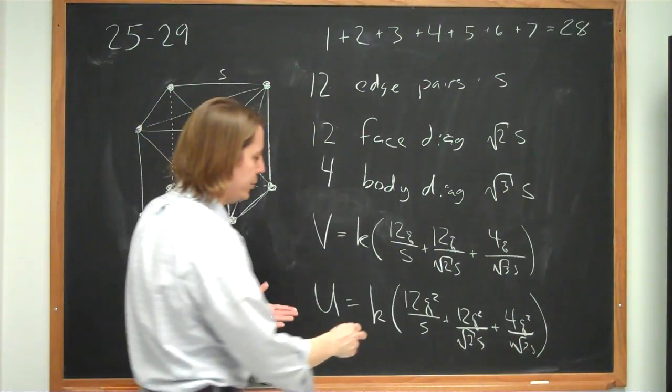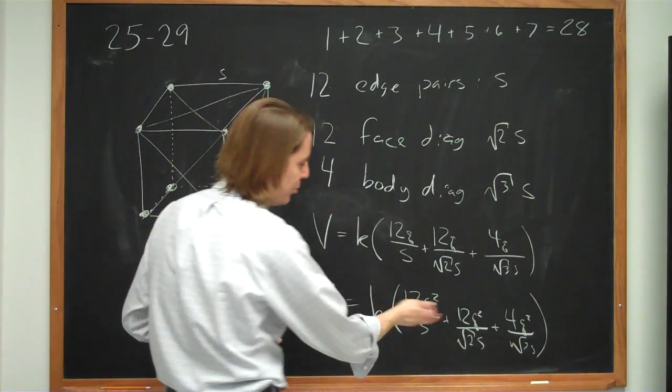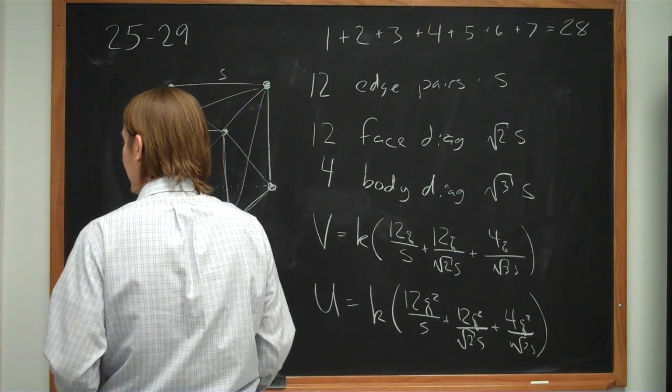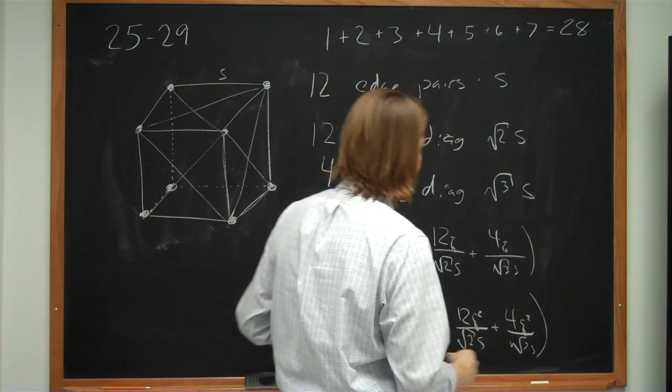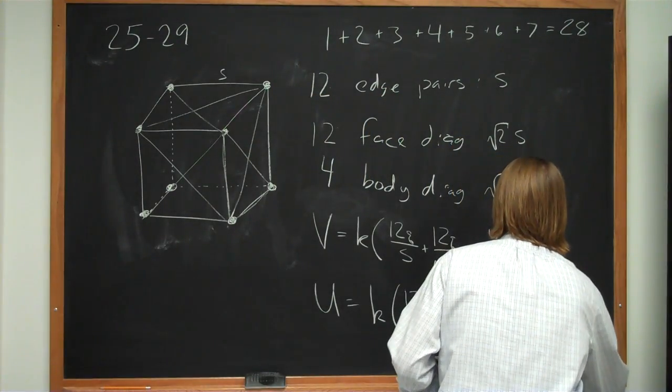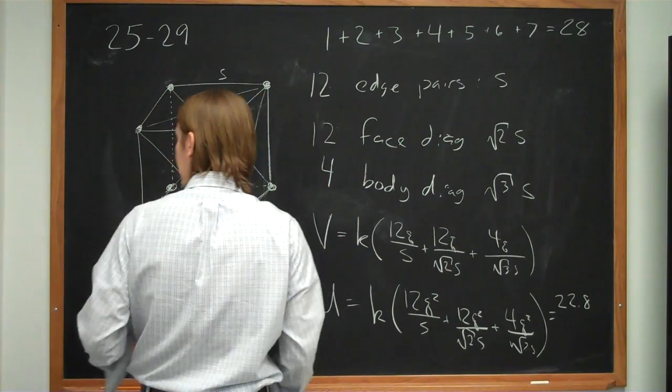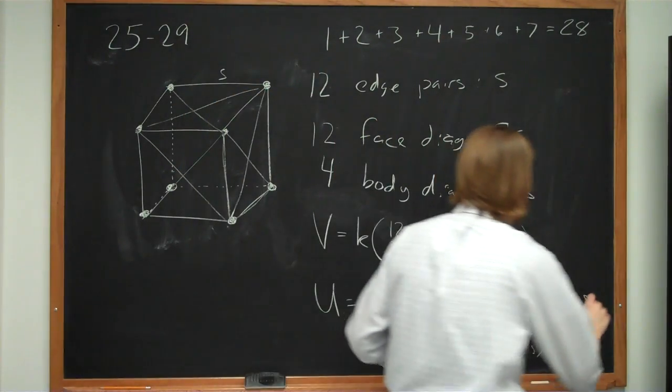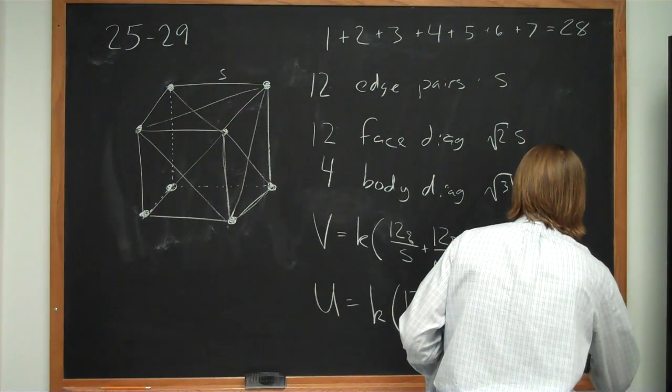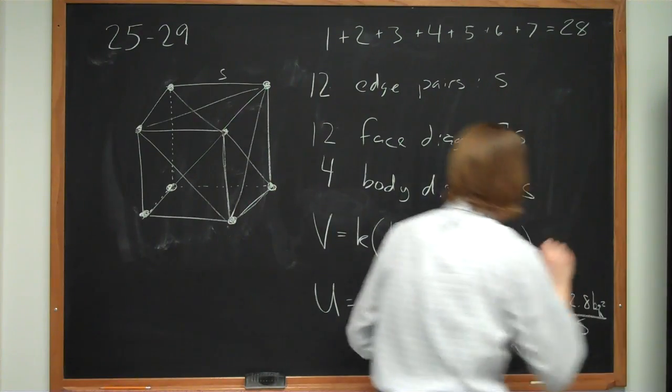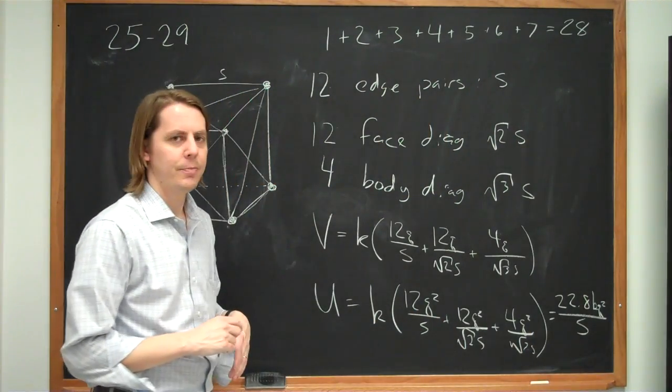And if you keep going, what you can do is pull out a Q squared, pull out a 4, pull out an s. And in the end, you get 22.8. When you combine all these 4s and 12s and square roots, you get 22.8 KQ squared over s, which matches the back of the book.